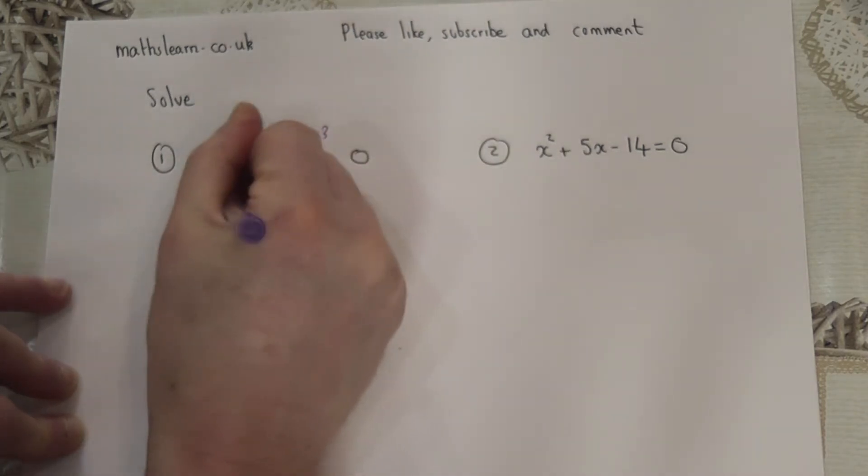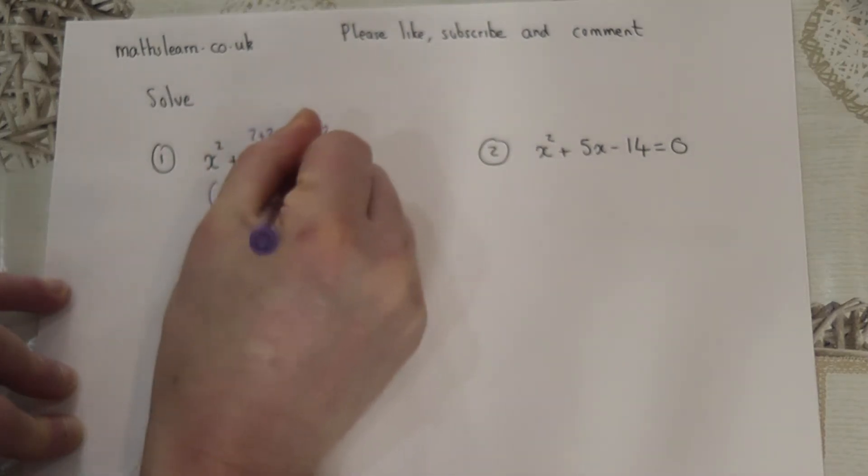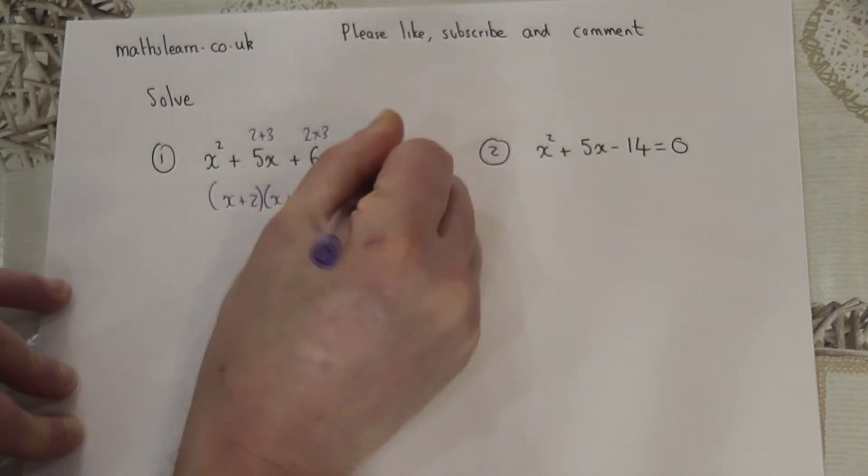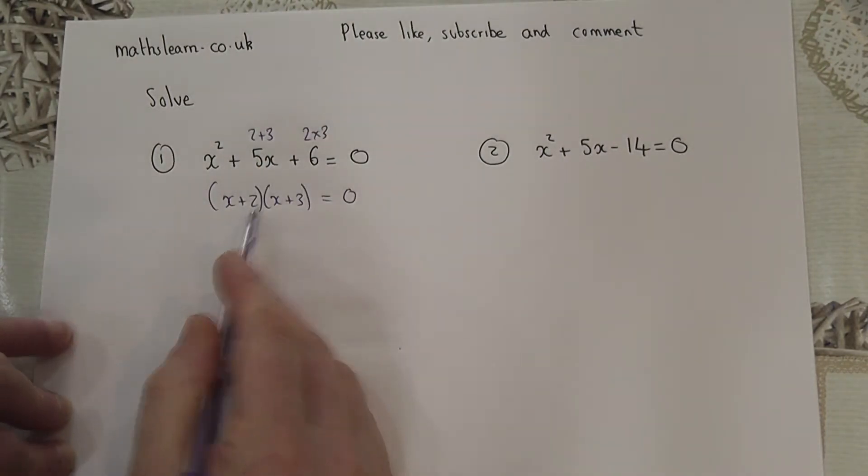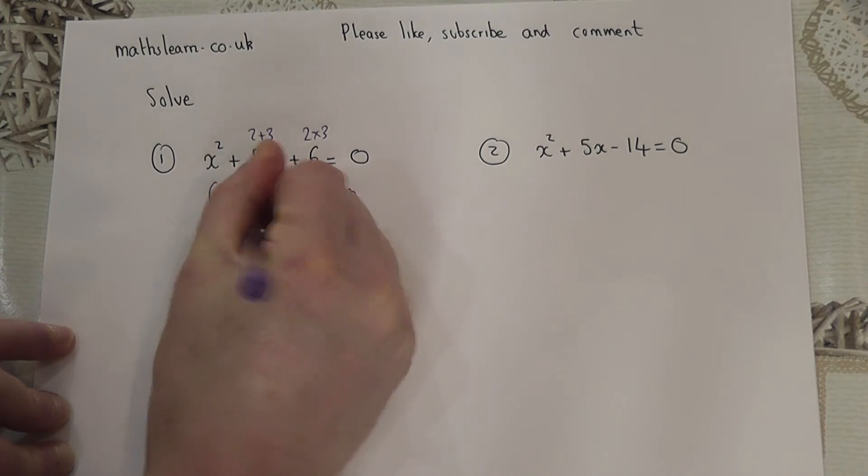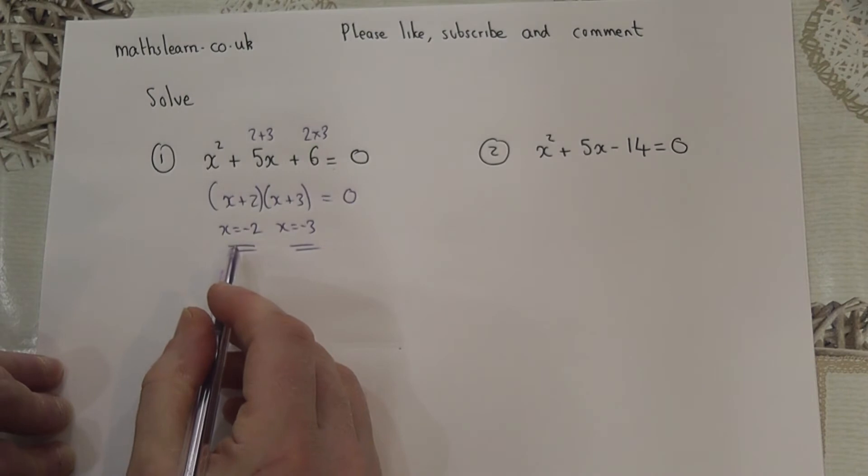I can therefore factorize this as (x + 2)(x + 3) = 0. And to make the bracket 0, x is either -2 or x equals -3. We swap the signs of the numbers in the bracket.